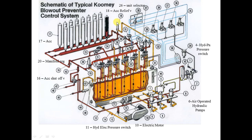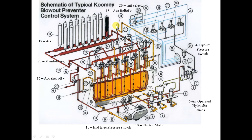Number eighteen is the accumulator relief valve — the second protection for the system. It is set at plus or minus 10 percent over the accumulator working pressure, which means 3300 psi. At this value the relief valve opens to protect all the system components from any failure in the power supply.